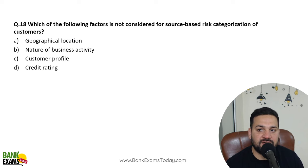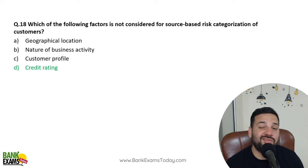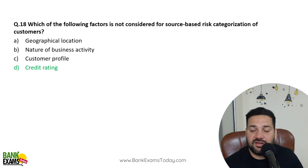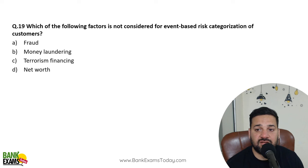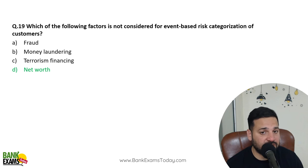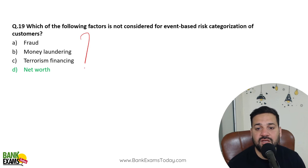Which factor is NOT considered for source-based risk categorization of customers? Credit rating is not considered. What is considered includes: nature of business activity, geographical location, history and relationship with the bank, and kind of transactions the customer carries out. For event-based risk categorization, what is NOT considered? Net worth is not considered. What is considered includes: whether the customer has committed fraud, money laundering, or terrorism financing.